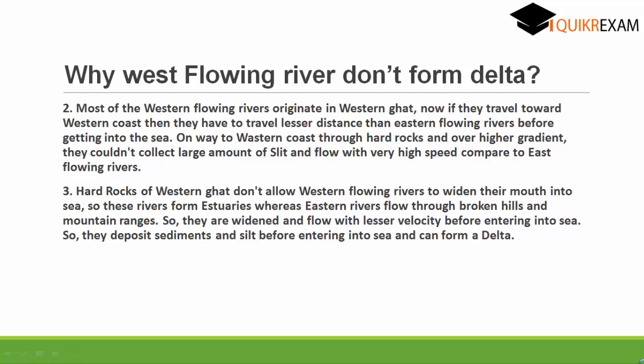So let's quickly revise why west-flowing rivers don't form Delta. First reason: the Western Ghats are at a higher elevation than the Eastern Ghats. Due to the higher gradient and higher slope, rivers falling from higher elevation have higher velocity. They carry sediments but wash them away because of the higher speed of the water.